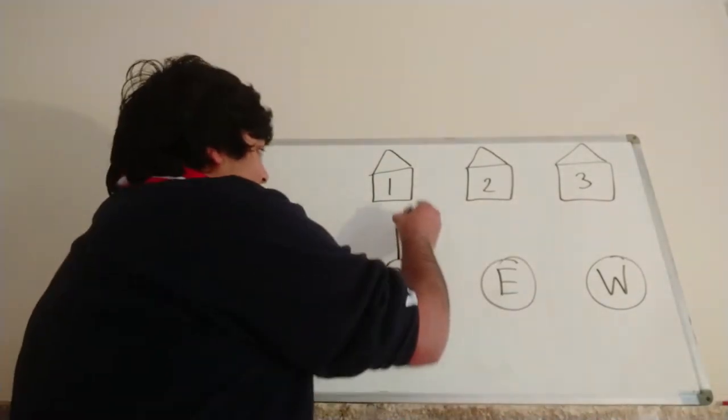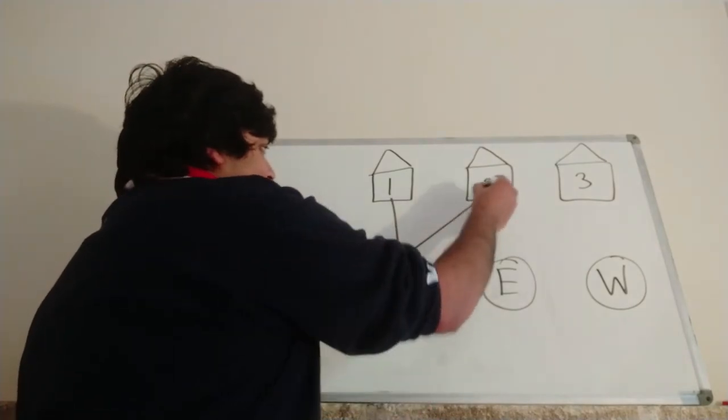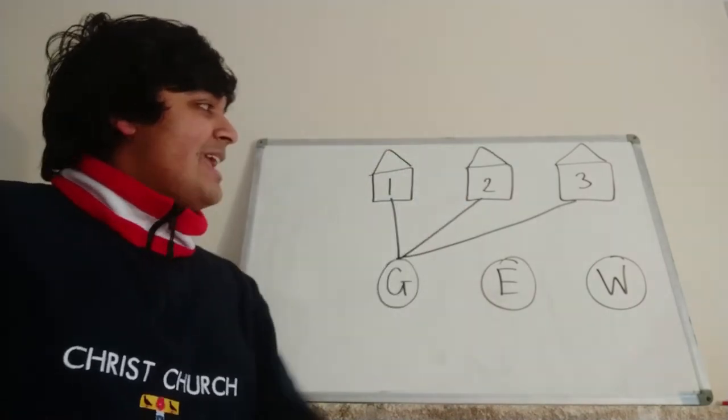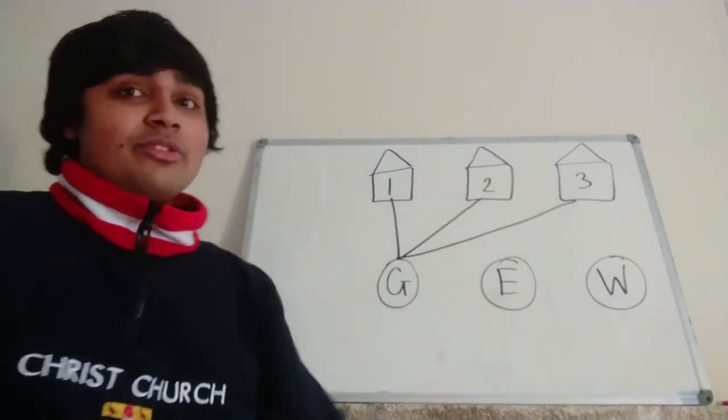What we want to do is connect each of the houses one, two, and three to each of gas, electricity, and water. So we want to make pipes from gas to one, gas to two, and gas to three. And the same thing for electricity connecting houses one, two, and three. And then water connecting one, two, and three as well.